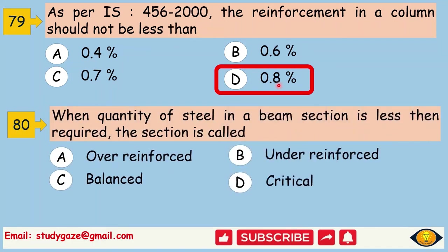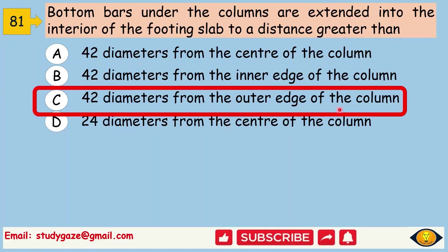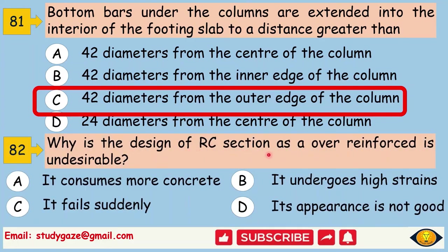When quantity of steel in a beam section is less than required, the section is called under reinforced. Bottom bars under the columns are extended into the interior of the footing slab to a distance greater than. Answer is 42 diameters from the outer edge of the column. Why is the design of RC section as over reinforced is undesirable? Because it fails suddenly. It won't give any indication before failure.